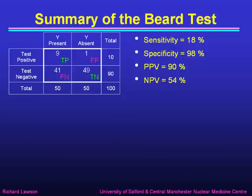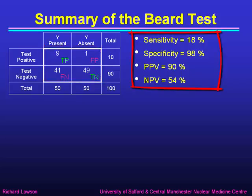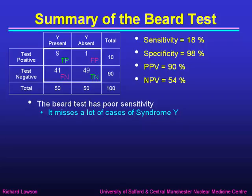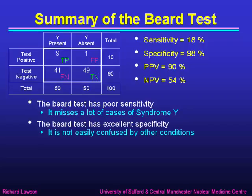To summarise what we've seen about this hypothetical beard test: we had 9 true positives, 49 true negatives, 1 false positive and 41 false negatives, giving a sensitivity of 18%, a specificity of 98%, a positive predictive value of 90%, and a negative predictive value of 54% in this population where the prevalence is 50%. The beard test has rather poor sensitivity — only 18%, it misses a lot of cases of Syndrome Y. On the other hand, it has excellent specificity of 98%, as there are very few other conditions that cause a beard — just the one bearded woman that confounded results in this example.